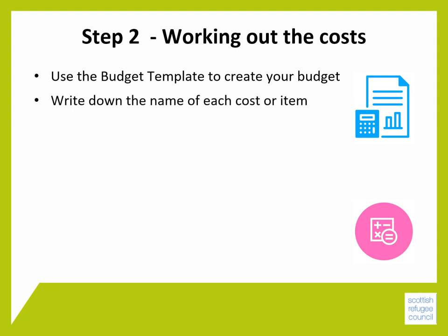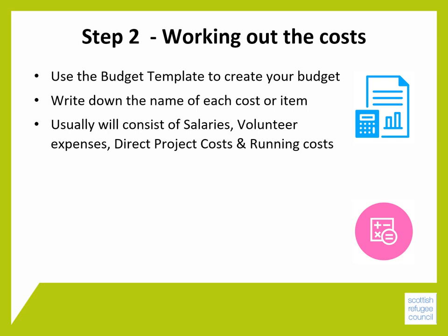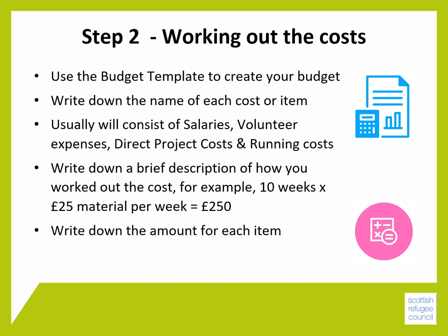Write down the name of each item under an appropriate heading, for example, materials, refreshments, childcare, etc. You will also probably use headings like sessional workers, salaries, volunteer expenses and running costs. Write a brief description of how you worked out the costs, for example, 10 weeks at £25 per week for materials, giving a total budget of £250. It's important to know how you work things out as funders will often want to know this. Write down the amount for each item and then add all of these up to get your total budget for the activity or project.